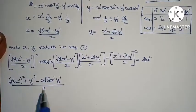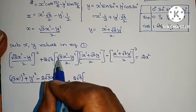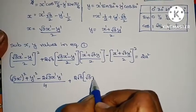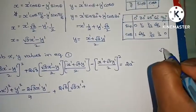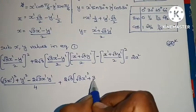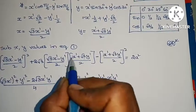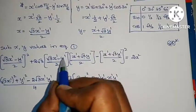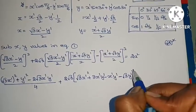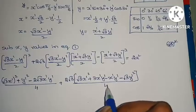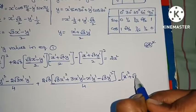Apply (a minus b) whole square: that gives a square plus b square minus 2ab. So the first term expands. The denominator gives 4. The cross terms include root 3 x dash times x dash giving root 3 x dash square, and root 3 times root 3 equals 3. Then x dash y dash terms: plus into minus gives minus x dash root 3 y dash. Combining numerators over denominator 4.